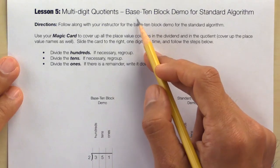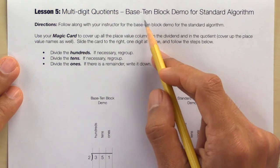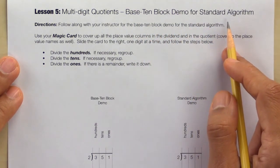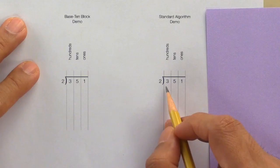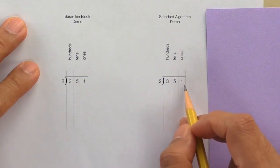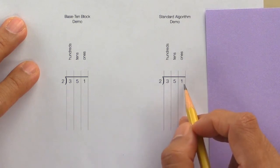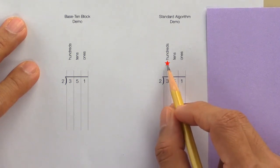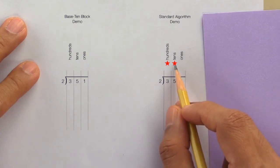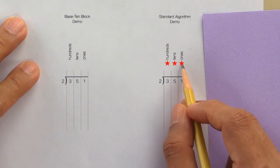Lesson 5: multi-digit quotients. We'll be using a base 10 block demo for the standard algorithm. Let's start with the standard algorithm — you'll need a magic card. Here we have the problem 351 divided by 2, the biggest dividend we've worked with so far. We'll divide the hundreds first, regroup if necessary, divide the tens, regroup if necessary, then divide the ones, and if there's a remainder we'll write it down.